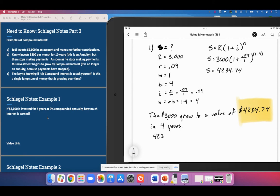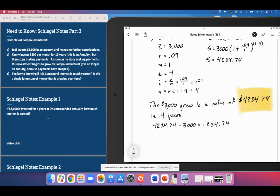The amount of interest that was made is whatever this grew to past our original amount. Our original amount was three thousand dollars, we ended with 4,234.74. If we subtract the three thousand from that we would see that we made 1,234 dollars and 74 cents.